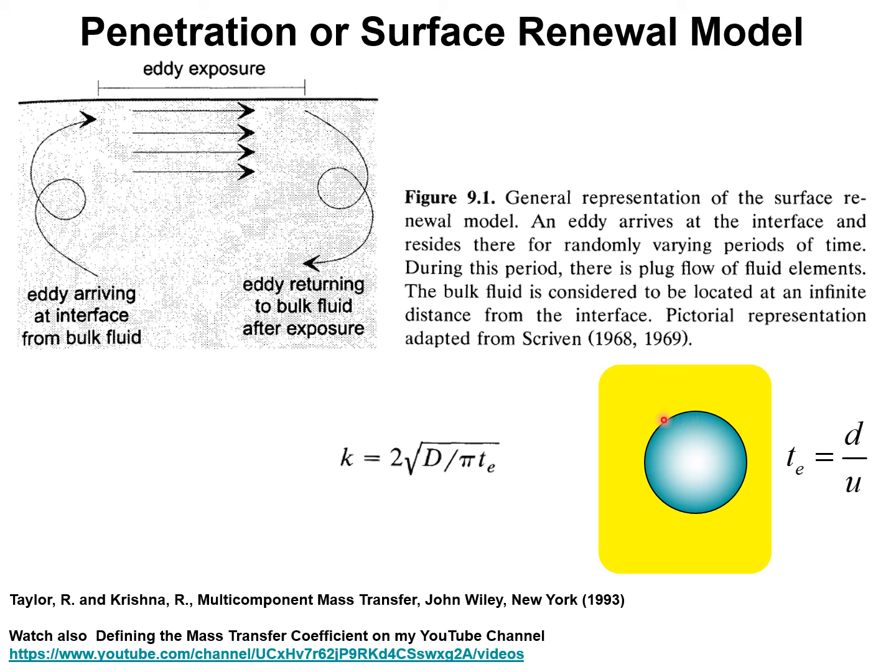During this bubble rise, the average exposure of the bubble to the surrounding liquid is given by the simple expression: the diameter of the bubble divided by the rise velocity. And this will give you a good estimate of the mass transfer coefficient within the bubble.